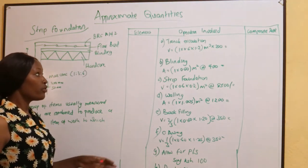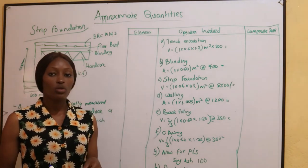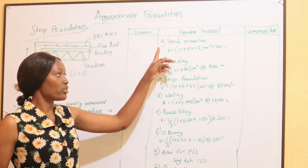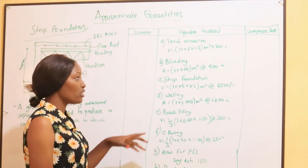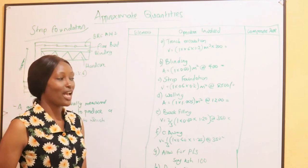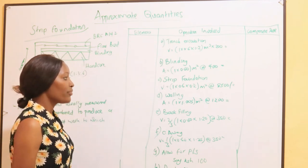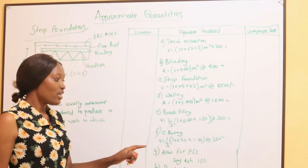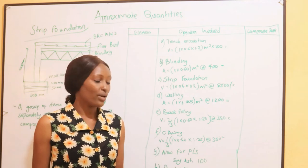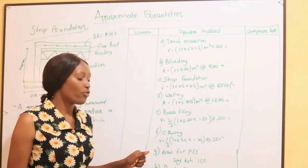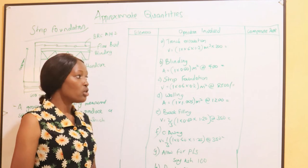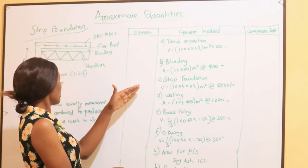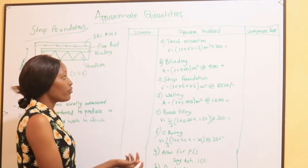In this method, a group of items are usually measured separately and combined to provide a composite item of work. For example, for a strip foundation, we go into its details: we excavate the trench, then do the blinding — a thin concrete layer — then the strip foundation concrete, then the walling within the strip foundation, then back-filling, then cut away the excess soil.